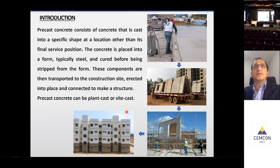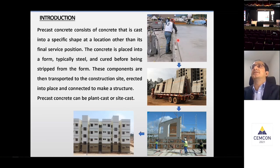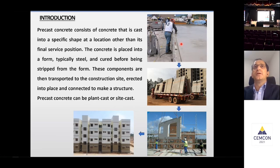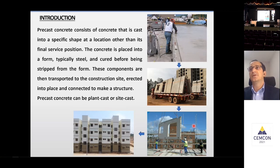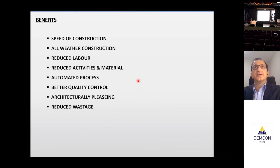Precast concrete consists of concrete that is cast into a specific shape at a comfortable location other than its final service position. The concrete is placed into a form, typically steel, and cured before being stripped from the form. These components are then transported to the construction site on trailers, erected into place, and then the structure is built. It can be a plant cast or site cast. The benefits include speed, all-weather construction, reduced labor, reduced activities, automated process, better quality control, architecturally pleasing results, and reduced wastage.